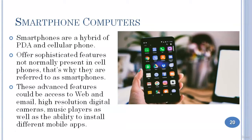Smartphones are a hybrid of a personal digital assistant and a cell phone. Because smartphones offer sophisticated features not normally present in cellular phones, that's why they are referred to as smartphones. These advanced features include access to the web and email, high-resolution digital cameras, music players, as well as the ability to install different types of mobile apps.